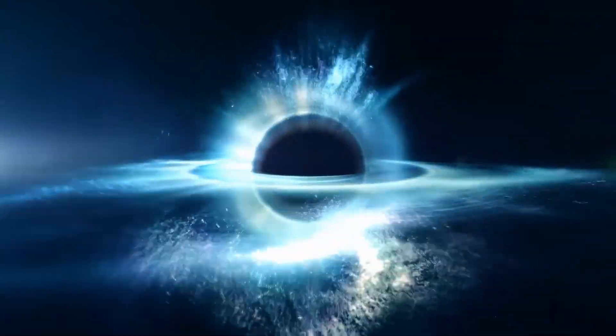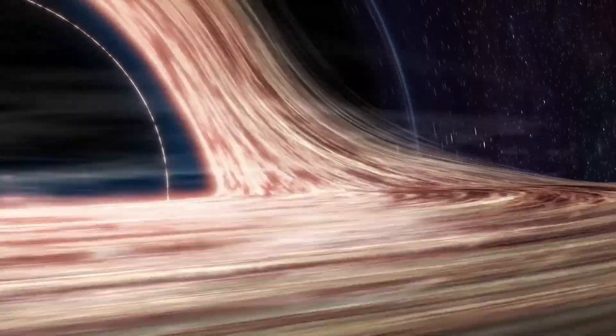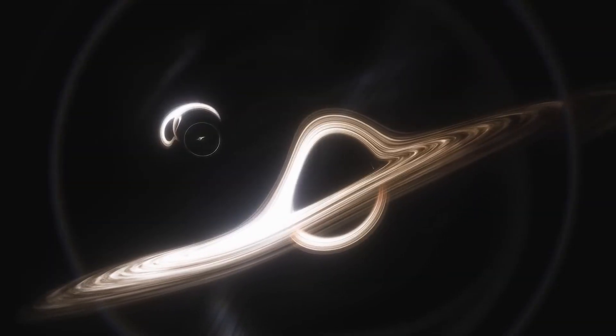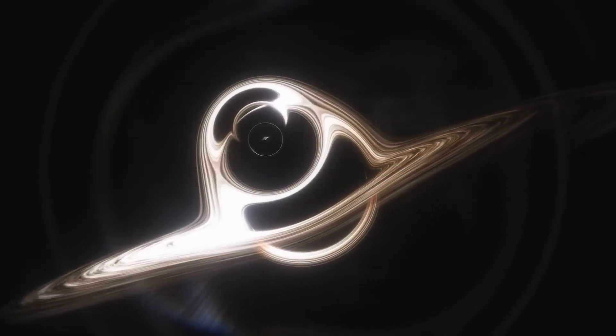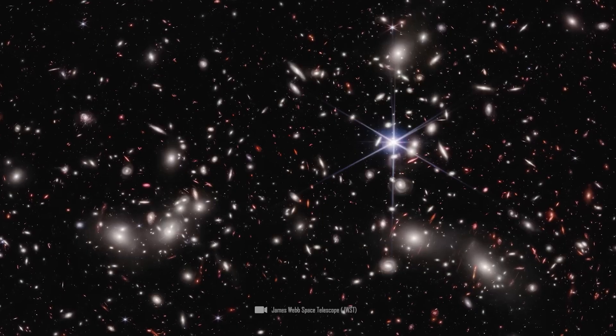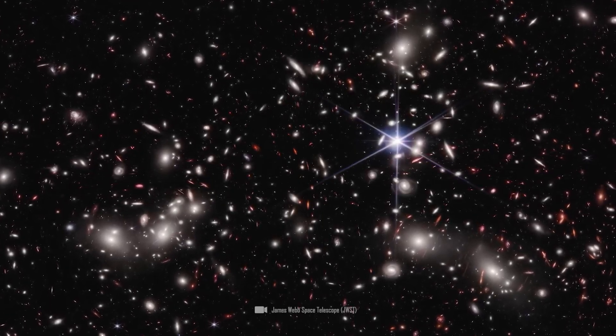The presence of such a large black hole at such an early stage contradicts previous theories which assume that supermassive black holes are formed by the collapse of massive stars or by the merging of smaller black holes. These processes take billions of years, and so this black hole is also scientifically impossible. What does this discovery now tell us about the old theories and their veracity?